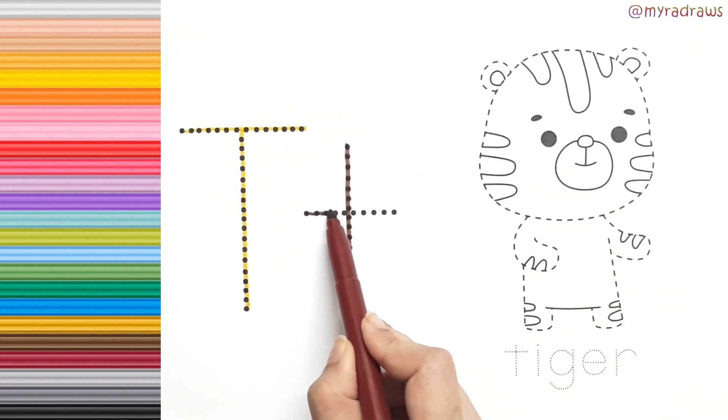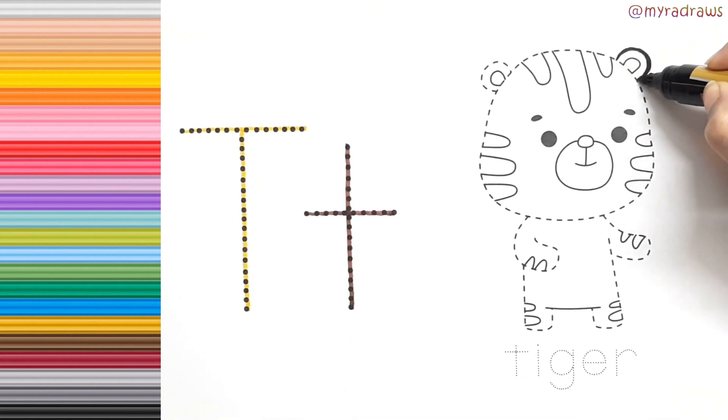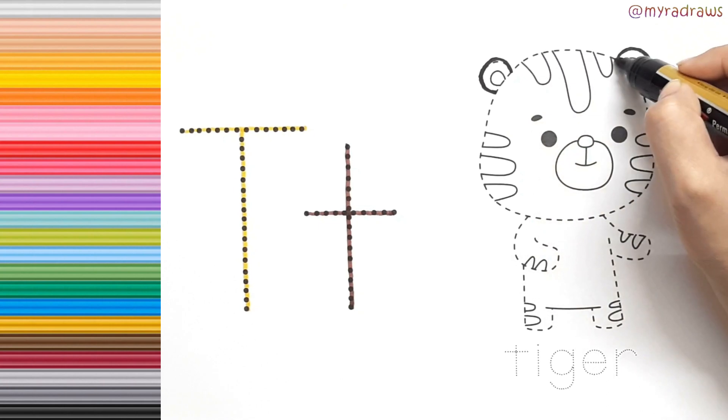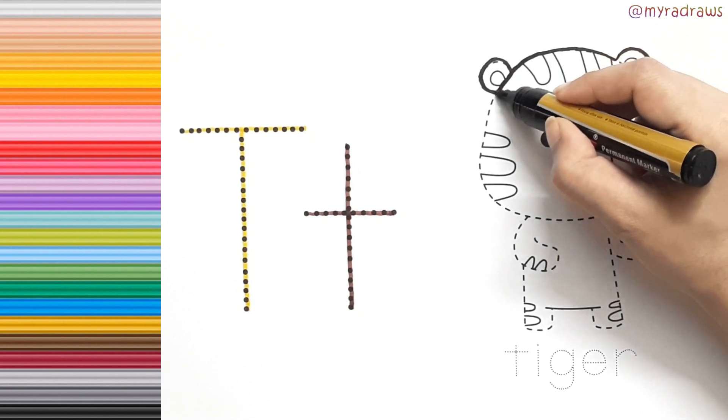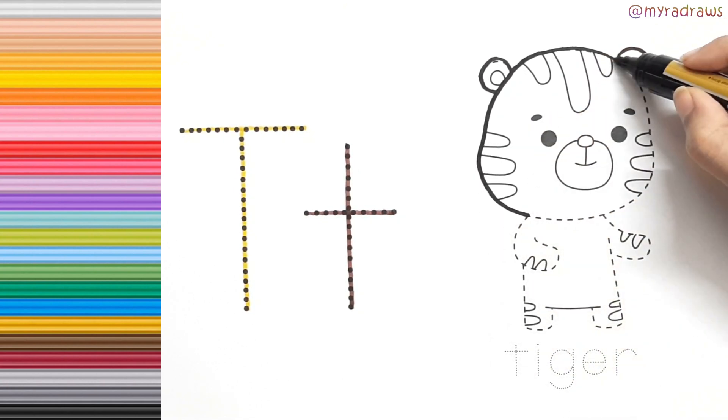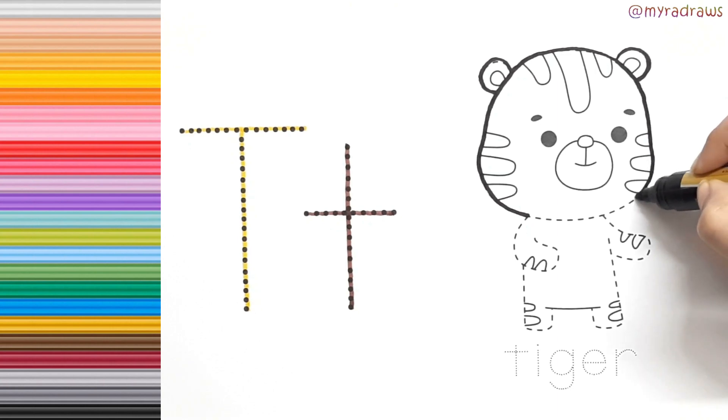T is for tiger. Tigers are big cats with beautiful stripes. They're strong hunters and live in jungles. Tigers are known for their powerful roars.